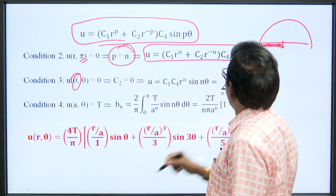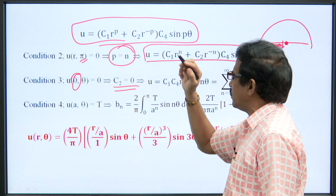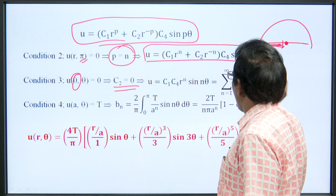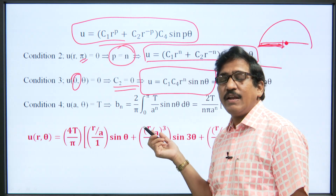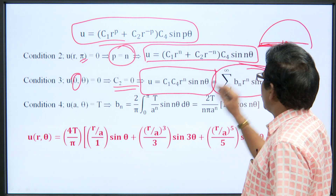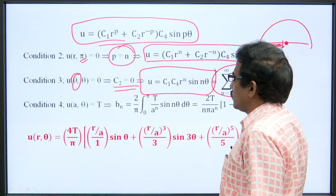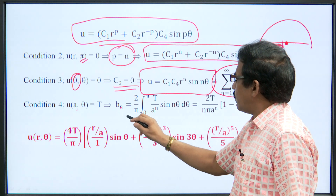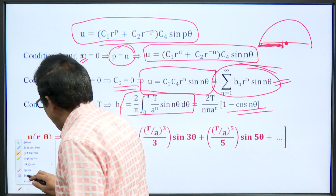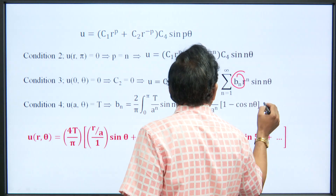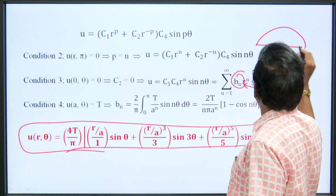Third condition: when R = 0 at the center, temperature = 0, which gives C₂ = 0 and the obtained solution takes a specific form with n = 1, 2, 3 … up to infinity. Taking the combination of all solutions gives a Fourier series comparison. Applying the fourth condition gives the value of Bₙ, which is then substituted into the assumed solution to get the final temperature distribution in the semicircular plate.